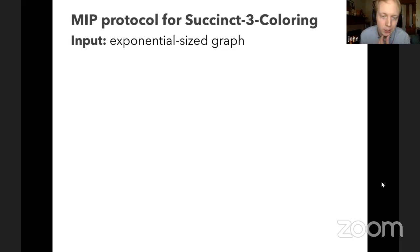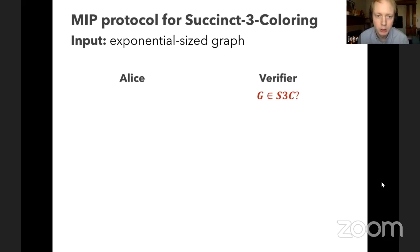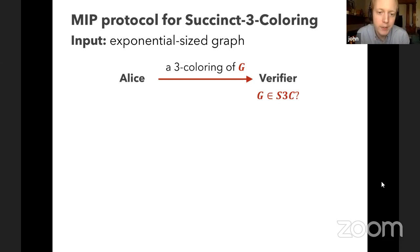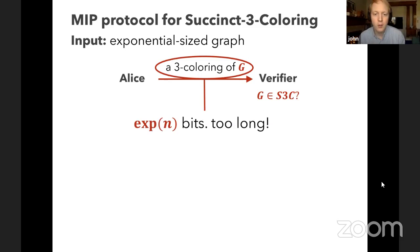The MIP protocol for succinct three coloring: the input is an exponential-size graph encoded with a succinct circuit, and the verifier wants to know if the graph is three-colorable. The most trivial protocol would have Alice send the entire three coloring of graph G to the verifier — the verifier could then check all edges are properly colored. But there's an obvious problem: the graph is exponentially large, so the three coloring requires exponentially many bits to write down.